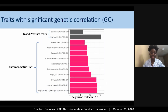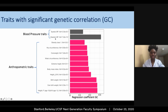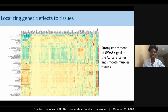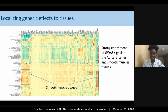Genetic correlation reveals a strong correlation with a number of anthropometric traits, more specifically body mass index, height, weight, and blood pressure, as expected. We also found strong correlation with systolic blood pressure and diastolic blood pressure. Finally, at the tissue enrichment level, we found strong enrichment of our GWAS signal within smooth muscle tissue, as well as arterial smooth muscle, which includes the aorta and arteries. All these findings consolidate our GWAS results.